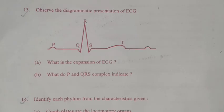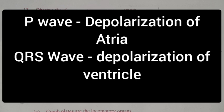Question 30: Observe the diagrammatic presentation of ECG. A. What is the expansion of ECG? Answer: Electrocardiogram. B. What do P and QRS complex indicate? Answer: P wave — depolarization of atria. QRS wave — depolarization of the ventricles.